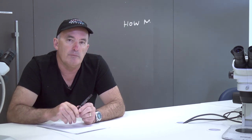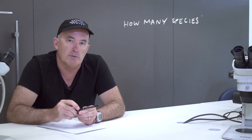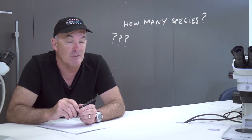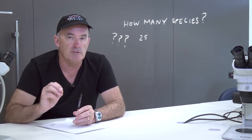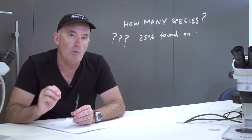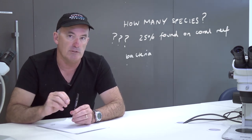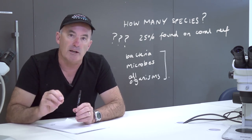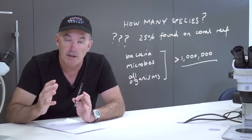Let's start with a very simple question: how many species are there in tropical coastal ecosystems? The answer to this question is not actually known. However, biodiversity experts have estimated that 25% of all known marine species are found in and around tropical coastal ecosystems, and that the number may exceed a million when bacteria and microbes and the full range of organisms is taken into account.